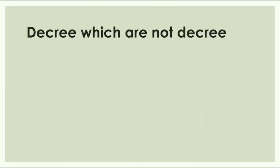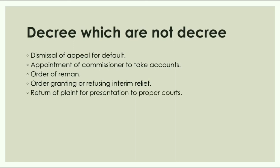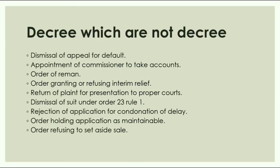Now we will understand decisions which are not decrees. The following decisions of a court are not decrees: dismissal of appeal for default; appointment of a commissioner to take accounts; order of remand; order of granting or refusing interim relief; return of plaint for presentation to proper court; dismissal of suit under Order 23, Rule 1; rejection of application for condonation of delay; order holding application as maintainable; order refusing to set aside a sale; order directing assessment of mesne profits.